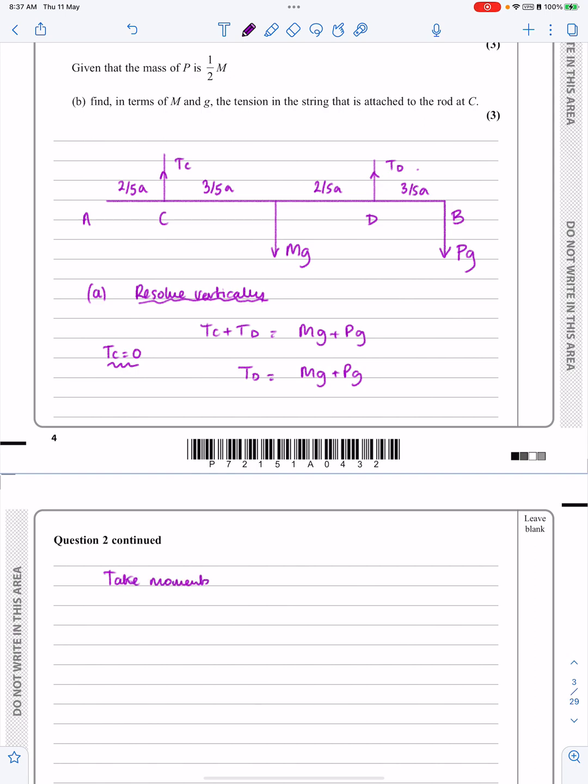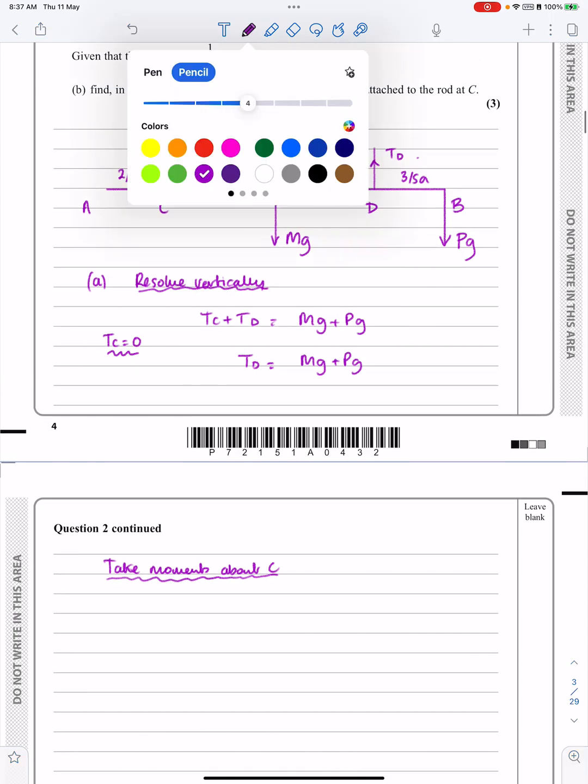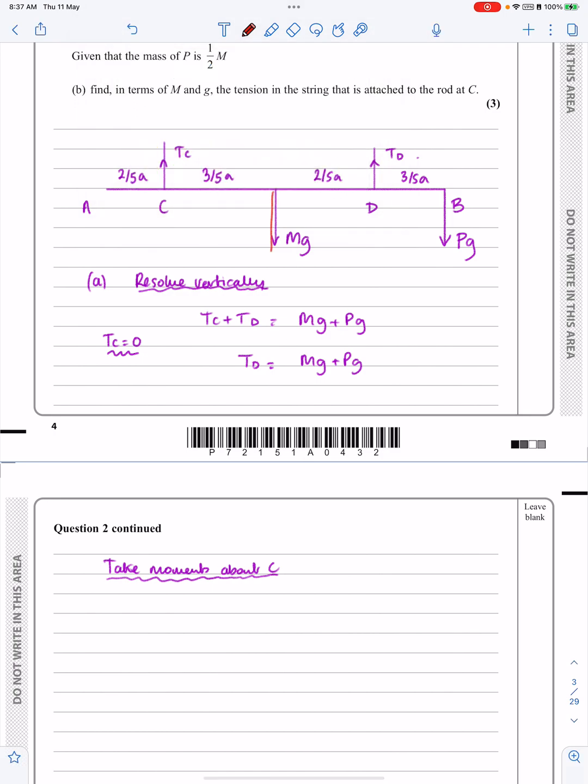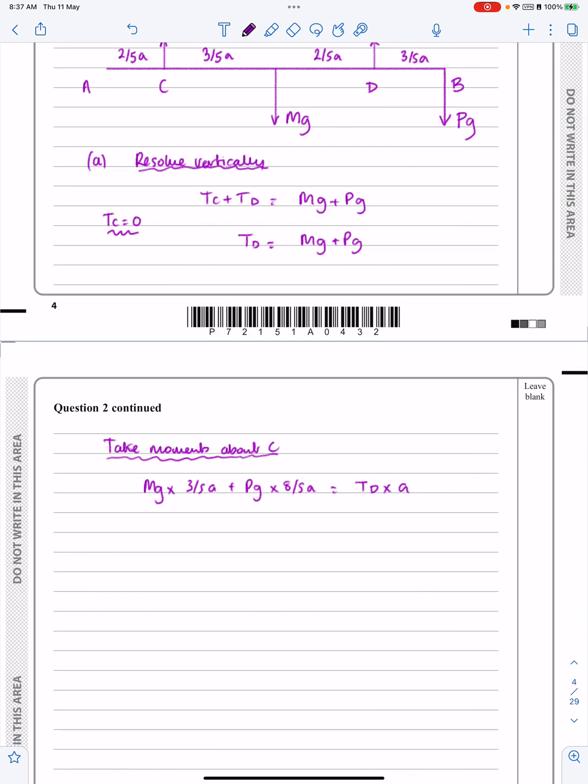If I take moments about C, then what do I get for moments about C? Mg, looking up here, I've got that one times that length, I've got that one times that length, is going to be equal to Td times that length. Clockwise is equal to anticlockwise. Stop and have a look at that again if that doesn't make sense to you. But that's going to be for me, Mg times 3 fifths A plus Pg times 8 fifths A is going to be equal to Td times A.